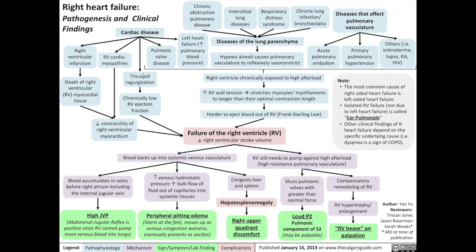Cardiac diseases can also include tricuspid regurgitation, or the backflow of blood through the tricuspid valve into the right atrium. That reduces the blood within the right ventricle, resulting in a chronically low right ventricle ejection fraction, which reduces the right ventricular stroke volume.